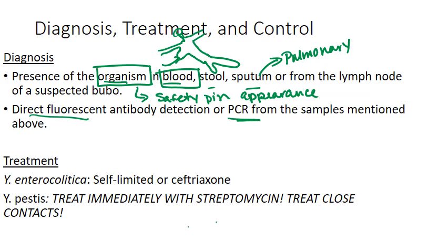For treatment, most Y. enterocolitica illnesses are self-limited and the patient will recover without intervention. In those rare cases where patients experience a chronic condition, you might consider an antibiotic. With Y. pestis, you need to treat immediately with streptomycin. You also want to treat close contacts, because if somebody has been exposed it's better to just treat them so we know everyone is okay.